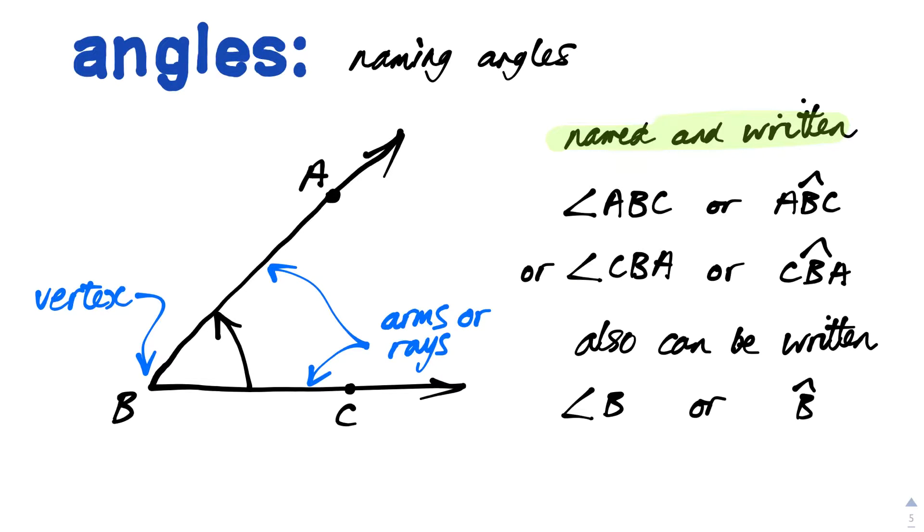When it comes to naming angles, we name them using the pronumerals. So ABC, because it's gone through A through B to C, which we write as angle ABC or ABC. Or we could say from C to B to A, so angle CBA or CBA. This can also be written as angle B because there's just one angle here, but it's better written with the three pronumerals.